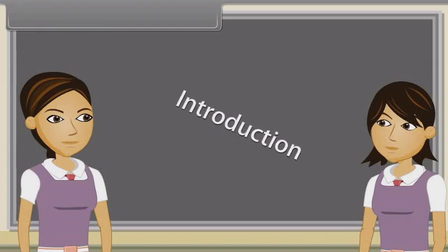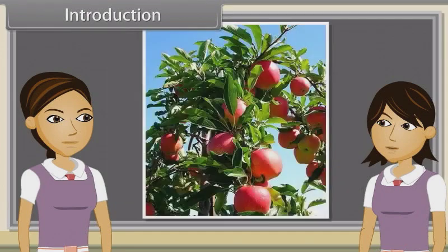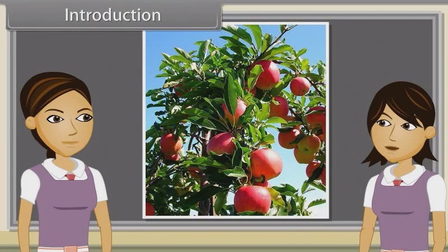When we observe a plant, then we see that every plant has roots, stem and leaves. Plants also have flowers and fruits. We have already discussed characteristics, types, modifications and functions of roots and stems. Now we will study leaf.